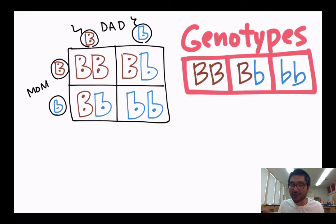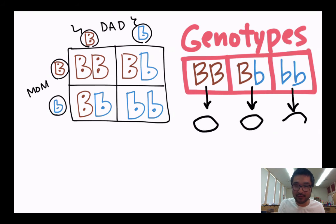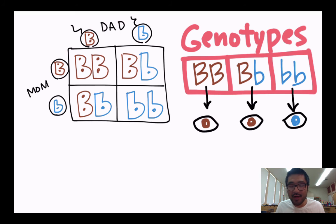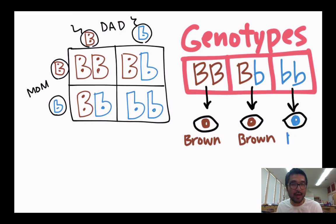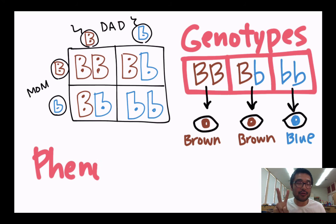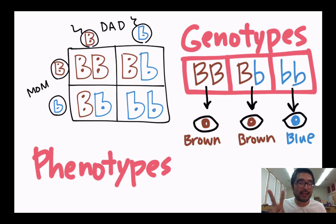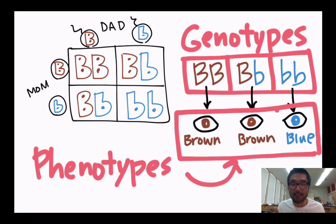But if you look at the traits that come out as a result of this cross, you have brown eyes and blue eyes — so you have two phenotypes that you can make with these two parents.